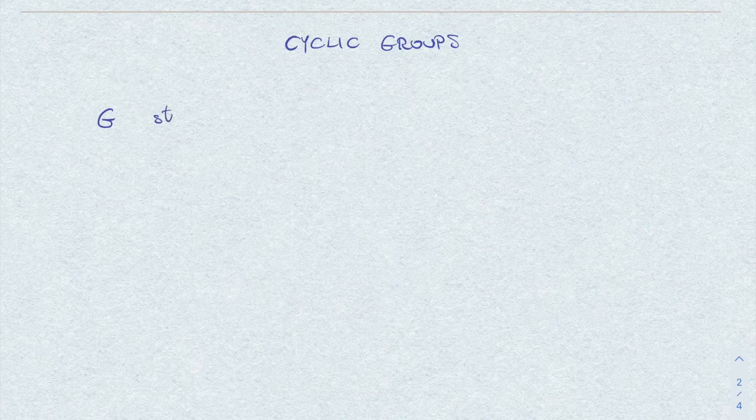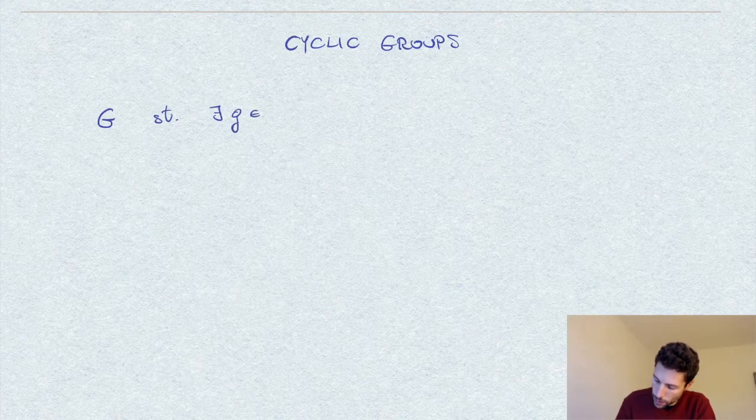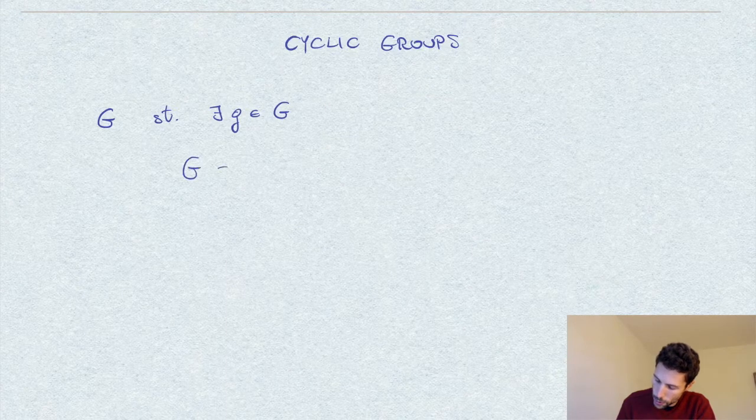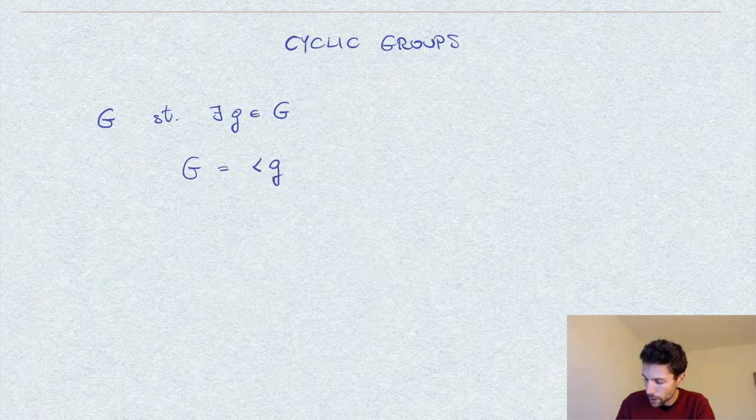So before going in detail in the proof of this fact, let me fix some notation and recall the basic definition. A cyclic group is a group G such that there exists an element g in G with the property that the group G can be written as the group generated by this element g.